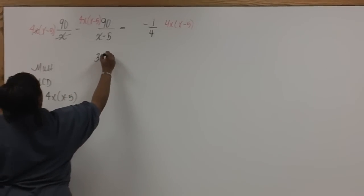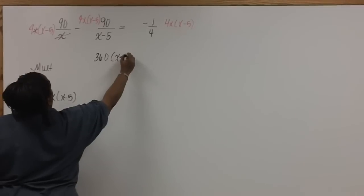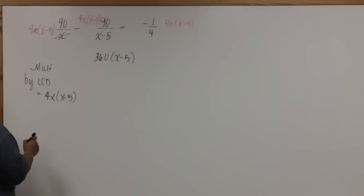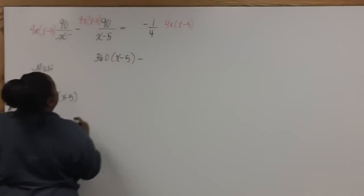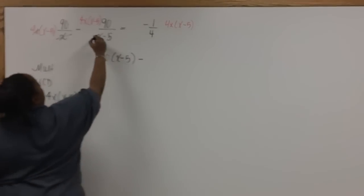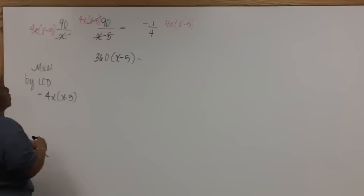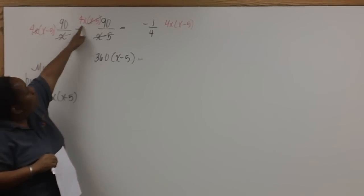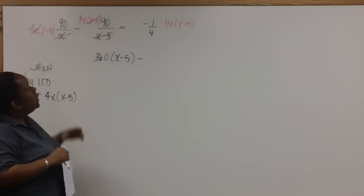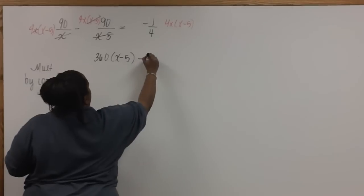So we have 360 times X minus 5 minus, here the X minus 5's canceled. And we're left with 4X times 90, which is 360X.